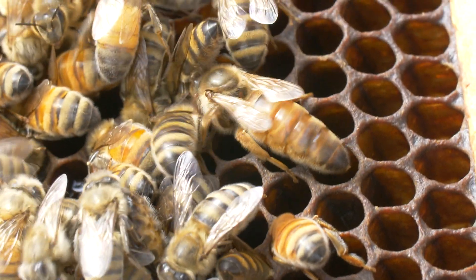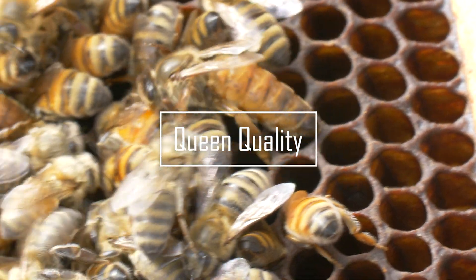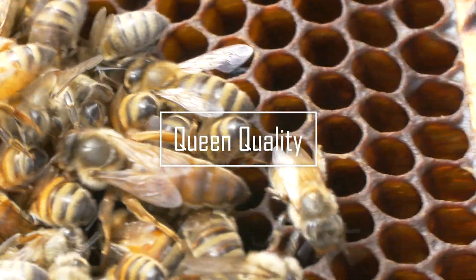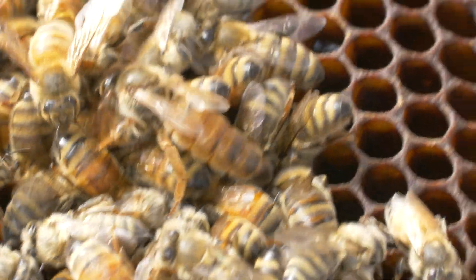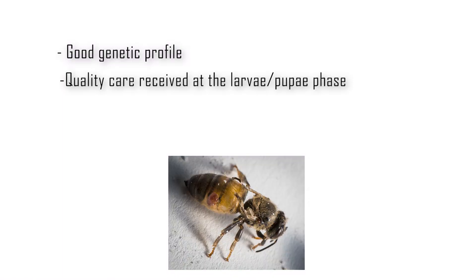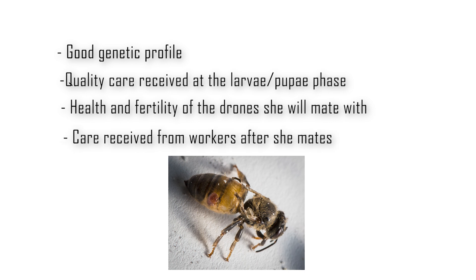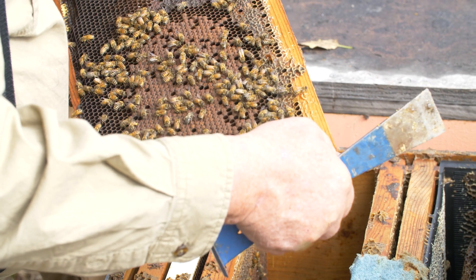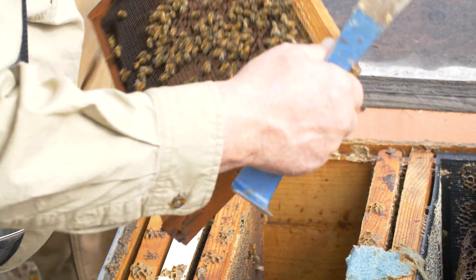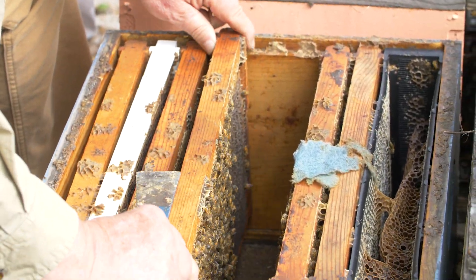Beekeepers often report queen quality as one of the main factors of colony losses. A healthy honeybee queen is a combination of a good genetic profile, quality care received by workers in the larval and pupal phase, the health and fertility of the 15 or more drones she will mate with, plus the care she will receive from workers after she mates. If something goes wrong in any of these steps, the overall health of the colony will be compromised.